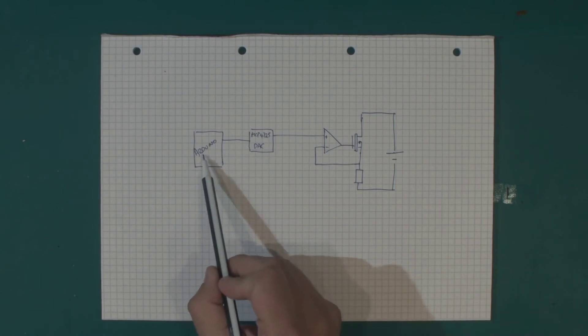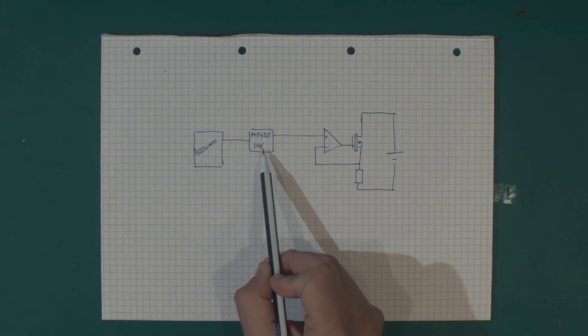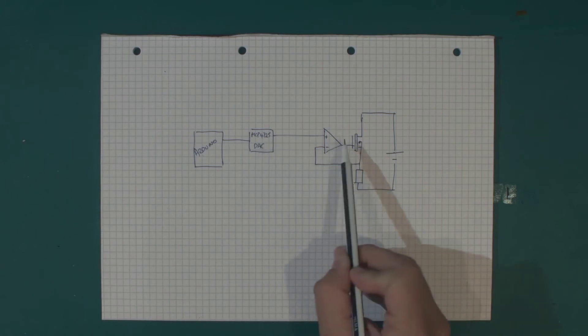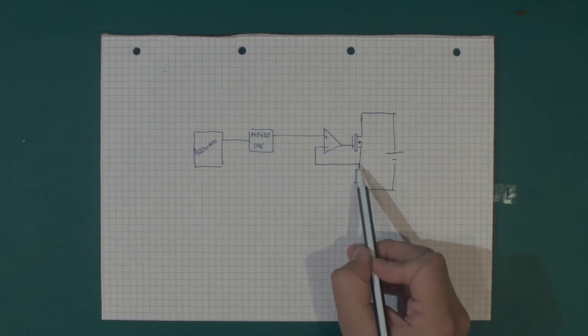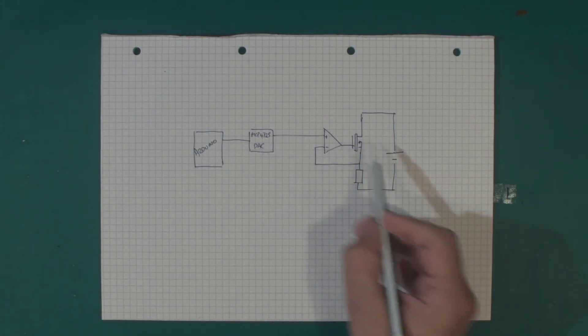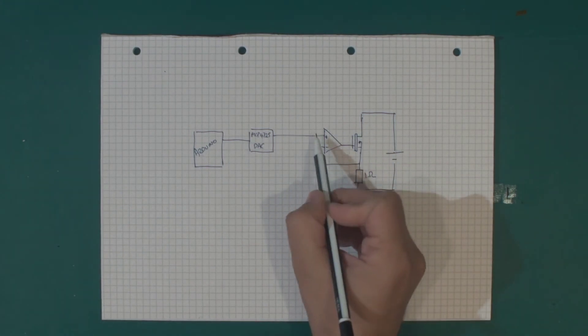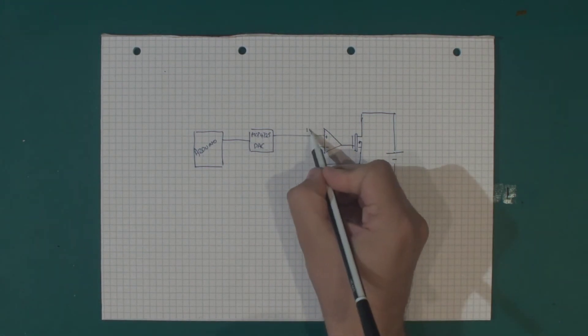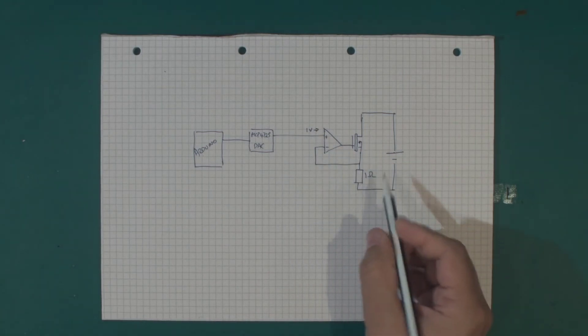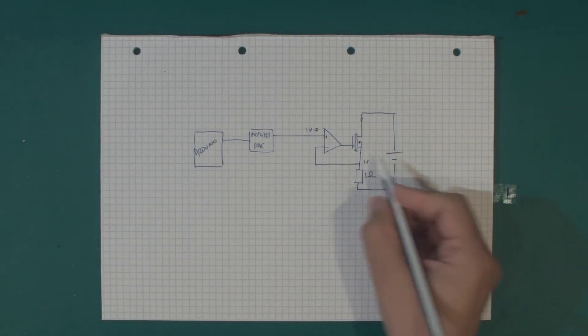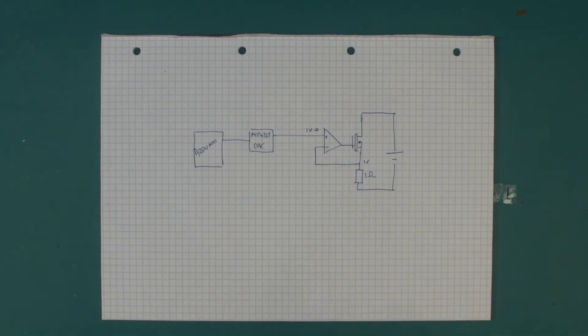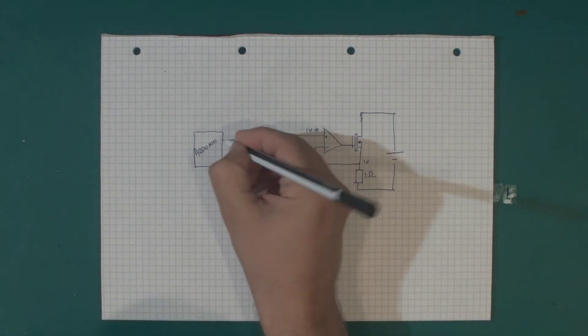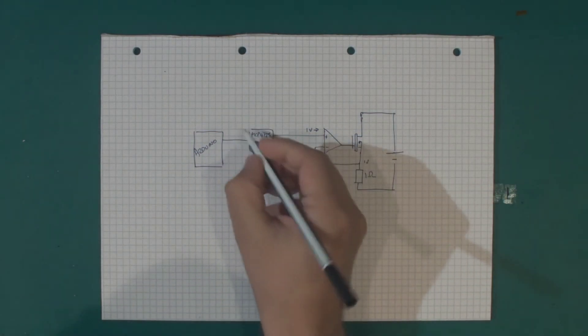We have our resistor which connects back to the negative side of our cell and then over to our positive side. This now means the Arduino can set a voltage out on our digital to analog converter, which sets the op amp to follow that voltage at this point. A 1 ohm resistor here and a 1 volt input at this point will cause 1 volt to be held here, which means that 1 volt at 1 ohm should be 1 amp.